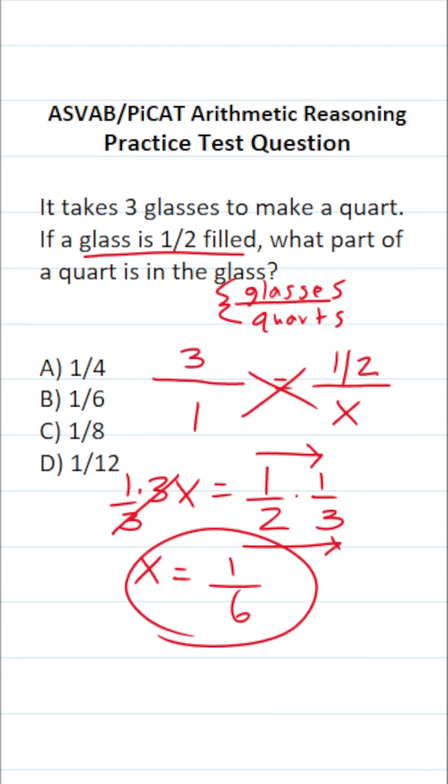So in other words, half of a glass is equal to one-sixth of a quart, so this one is going to be B.